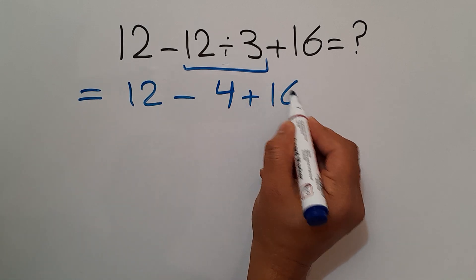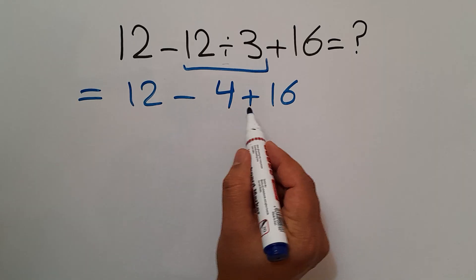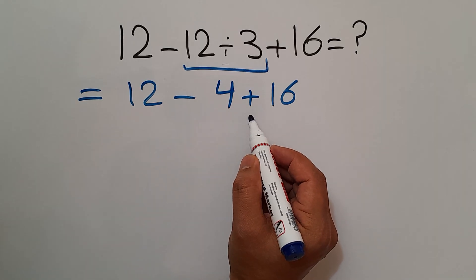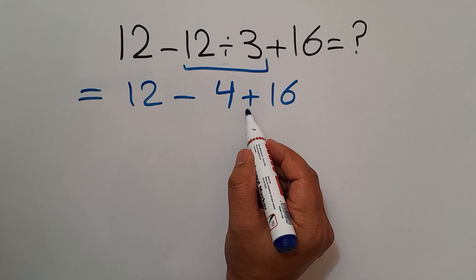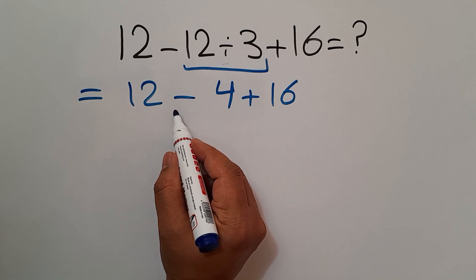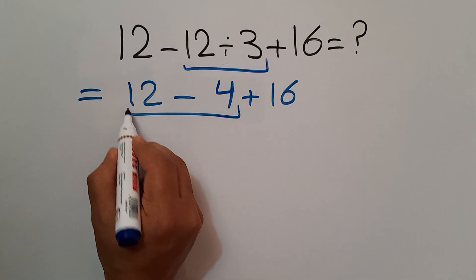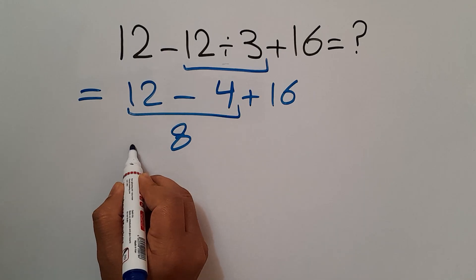And now we have one subtraction and one addition. According to the order of operations, addition and subtraction have equal priority, and we have to work from left to right. 12 minus 4 gives us 8, so we have 8 plus 16.